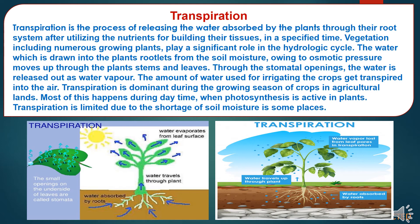Now, transpiration. Transpiration is the process of releasing the water absorbed by the plants through their root system after utilizing the nutrients for building their tissues. Vegetation including numerous growing plants plays a significant role in the hydrological cycle. The water drawn into the plant rootlets from soil moisture, owing to osmotic pressure, moves up through the plant stems and leaves. Through the stomatal openings, the water is released as water vapor. Transpiration is dominant during the growing season of crops and most of this happens during daytime when photosynthesis is active in plants.